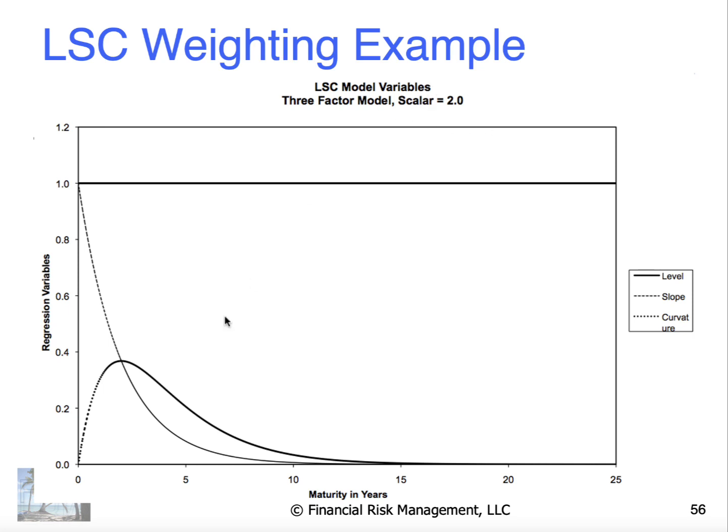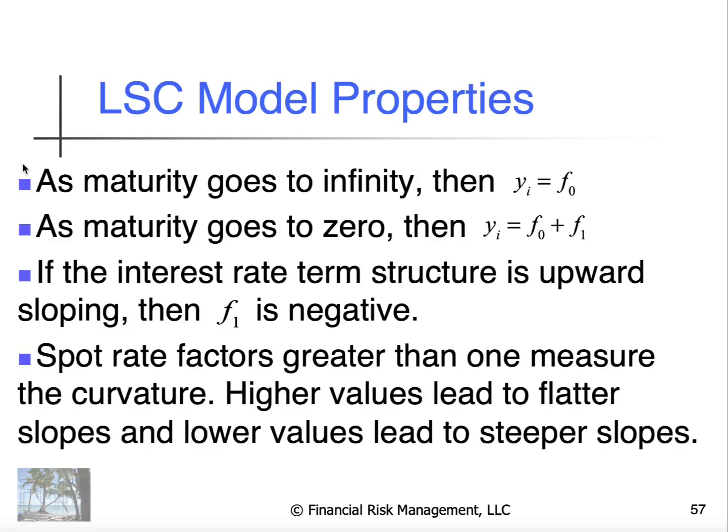In this case, the scalar is 2. That peak point, I think it's a little north of 2. But there, it's closely related. And so as maturity goes to infinity, the yield becomes level. As it goes to zero, it becomes level plus slope. If interest rate term structure is upward sloping, then the slope is measured as a negative. Spot rate factors are greater than 1 measure the curvature. Higher values lead to flatter slopes, and lower values lead to steeper slopes.